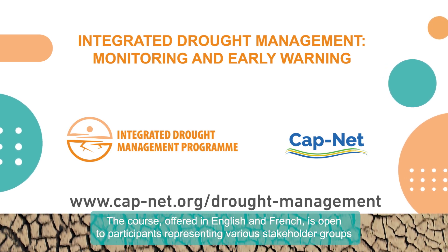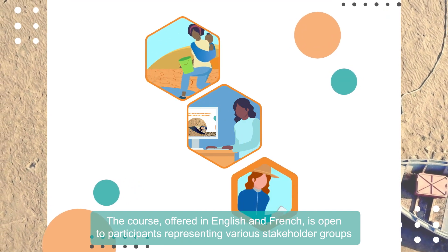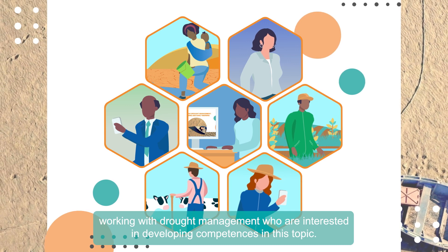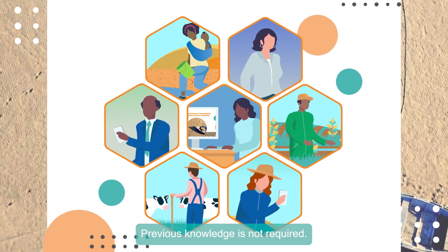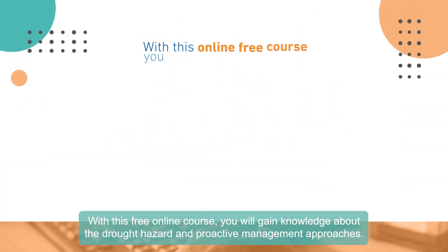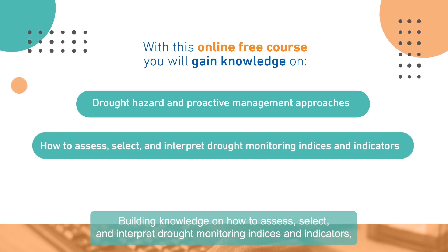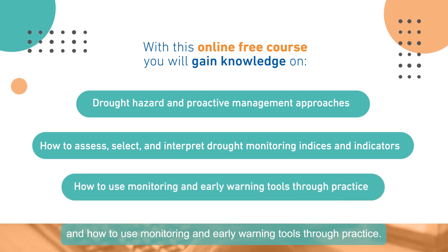The course, offered in both English and French, is open to participants representing various stakeholder groups working with drought management who are interested in developing competences in this topic. Previous knowledge is not required. With this free online course, you will gain knowledge about drought hazards and proactive management approaches, building knowledge on how to assess, select and interpret drought monitoring indices and indicators, and how to use monitoring and early warning tools through practice.